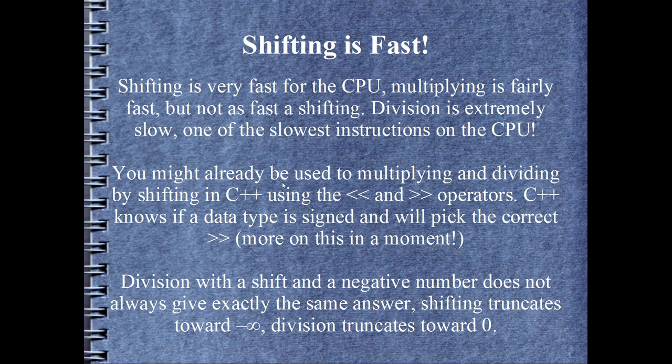You might already be used to multiplication and division and shifting bits in general from C++ and other C-based languages, where we've got these double chevron operators, the shift left and shift right operators. C++ is actually pretty clever, it's a type-safe language, and it's going to pick the correct right shift for you. We'll see in a moment that assembly's not type-safe and you've got to know which shift to use, depending on whether your data is signed or not when you're dividing. And something else that might come up, division with a shift and a negative number actually doesn't round the same way that integer division with div or idiv rounds. Division with a shift actually truncates toward negative infinity, whereas with idiv it truncates toward zero.